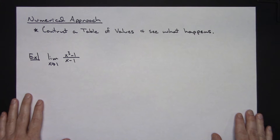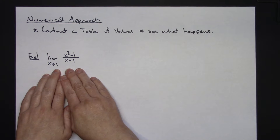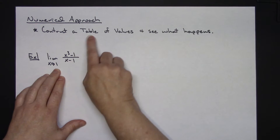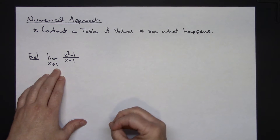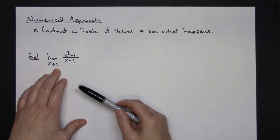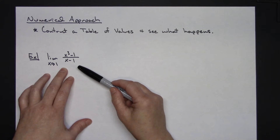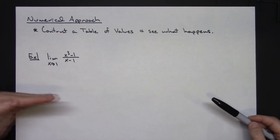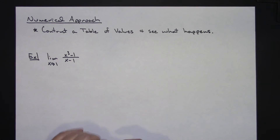Now let's look at a numerical approach. If you don't know what a function looks like and don't have a graphing calculator, you can construct a table of values. When I do this by hand I make my table left to right, because we need to examine the limit from the left and from the right. That way you're checking the values on both sides.